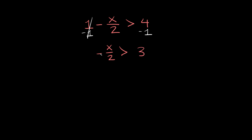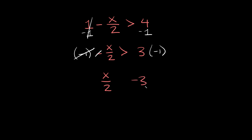Now the next thing we can do is get rid of this negative sign, and we can do that by multiplying this whole side by negative 1 — and again, what we do to one side we do to the other, so we'll multiply this side by negative 1 also. This negative 1 and the negative sign cancel out, leaving us x over 2. On this side we have 3 times negative 1, which is negative 3. Now whenever you multiply or divide both sides by a negative number, you flip the sign — so here instead of greater than, it flips to less than.